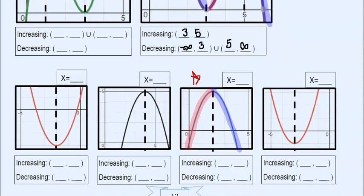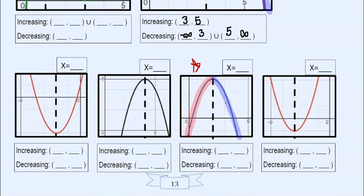And let's look at one more. So on this one, x equals two. And the increasing interval is from negative infinity to that number, two. And then the decreasing interval would be from two to positive infinity.